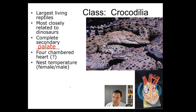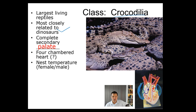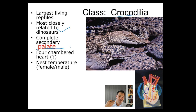Then we have the crocodiles — class Crocodilia. These are the crocodiles and the alligators, the largest living reptiles, most closely related to dinosaurs, which includes birds. They have a complete secondary palate, meaning the roof of their mouth is solid bone. The significance of that is it allows crocodiles, and us, to breathe through the nose while having food in the mouth or while submerged below the water.